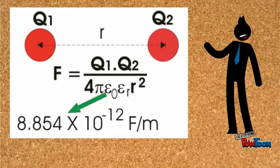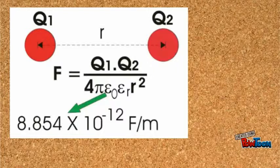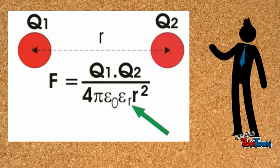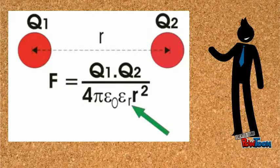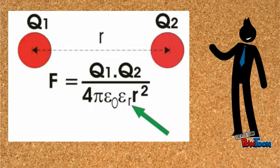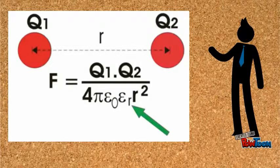Where epsilon 0 is the permittivity of air or vacuum, and its value is 8.854 into 10 to the power of minus 12 farads per meter, and epsilon r is the relative permittivity of the surrounding medium in respect to the permittivity of air or vacuum.